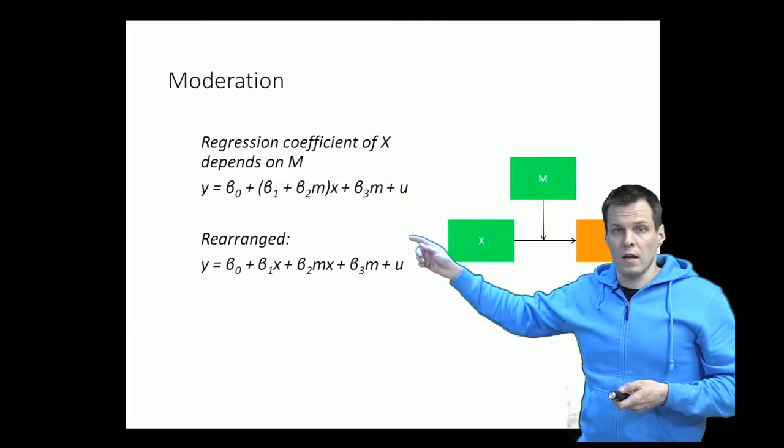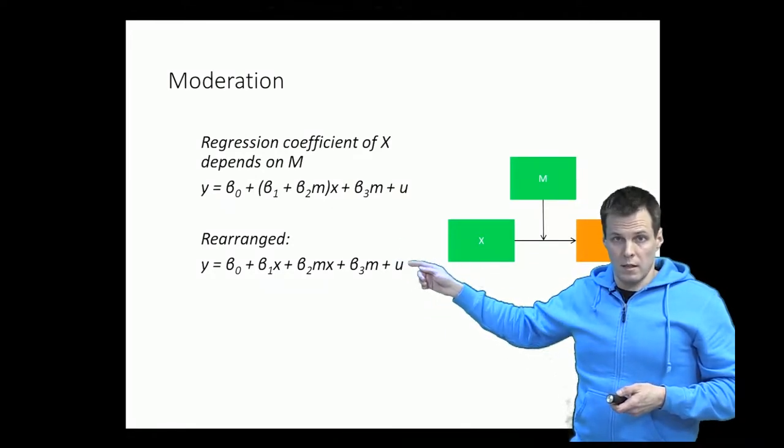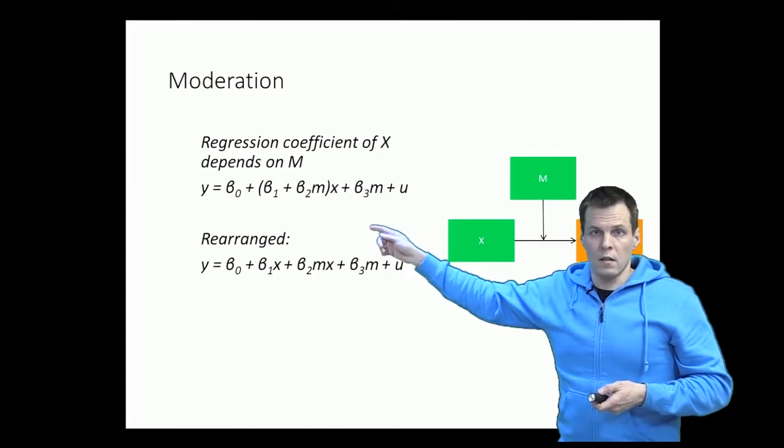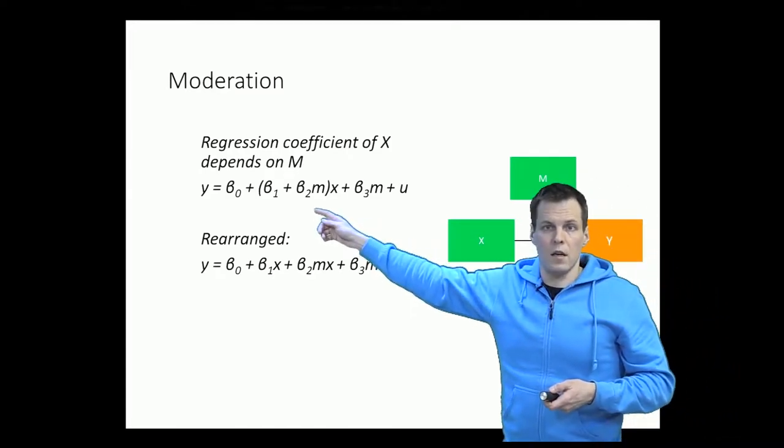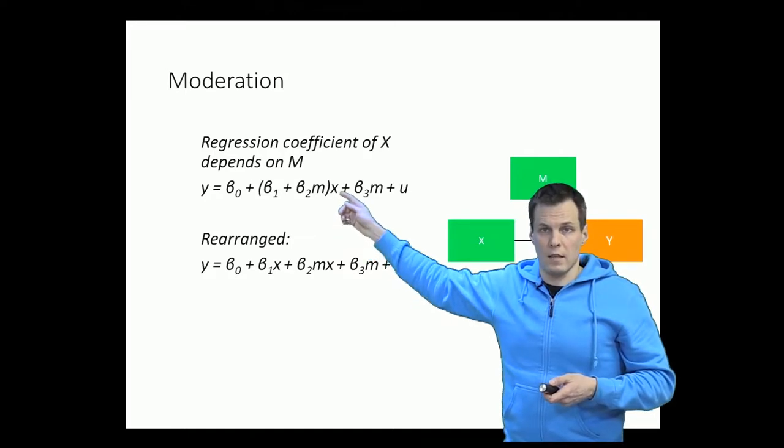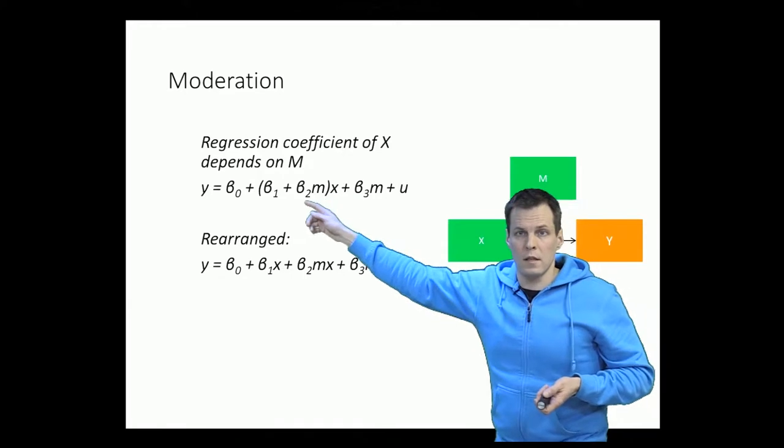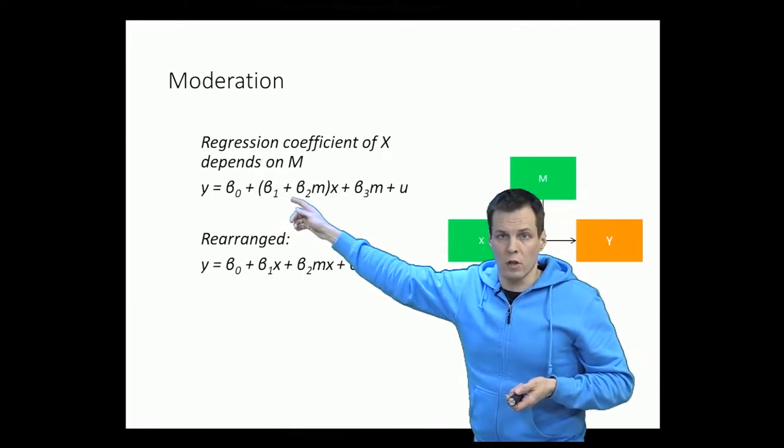We can write an interaction model such as that one in a slightly different way. So we can write it in that way and here we can see that the regression coefficient of x is actually not stable, it's not constant anymore. Instead it's beta 1 plus beta 2 times m.